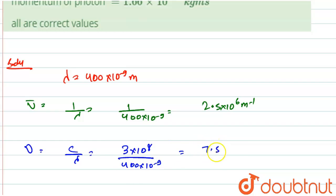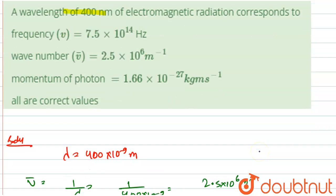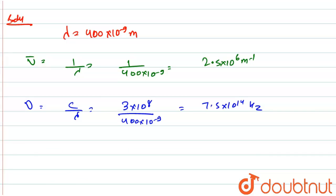The last one is we have to find the momentum of photon. So momentum of photon is equal to H upon lambda. The value of H is 6.626 into 10 to the power minus 34 upon 400 into 10 to the power minus 9, which equals kg meter per second.